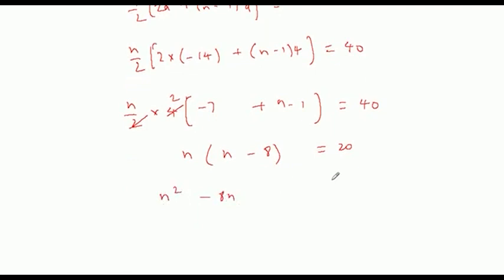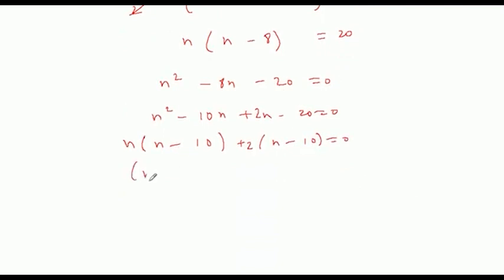Multiplying n, we get n squared minus 8n minus 20 equals 0. Factoring: n squared minus 10n plus 2n minus 20 equals 0. Taking n common, we get n minus 10, and 2 common gives n minus 10. So n minus 10 into n plus 2 equals 0. This gives n equals 10 or n equals minus 2. Since n is a natural number, n equals 10.